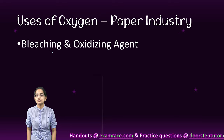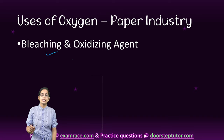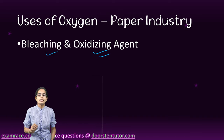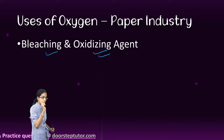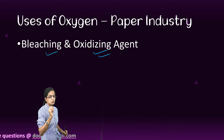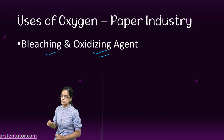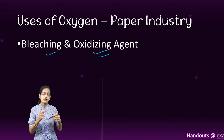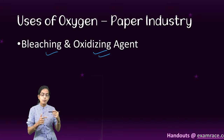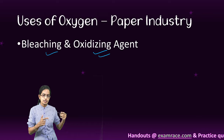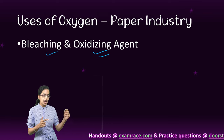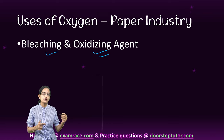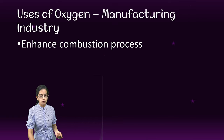In the paper industry, it is used as an excellent bleaching agent — a whitening agent. Since it has oxidizing properties, it also enhances the physical properties of purifying the paper process and improves the cost of paper plants by lowering the operational cost.